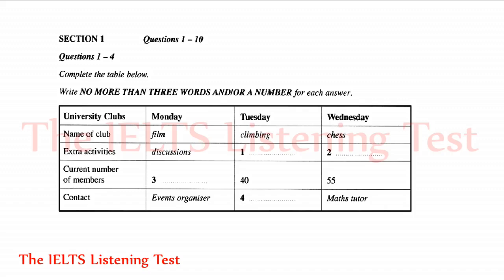Right. OK. So, who do I see if I want to join these clubs? Well, if you go round the stands and speak to the people there. For the film club, that's the events organiser. For climbing, you'll need the club secretary. And the chess club is organised by one of the maths tutors.